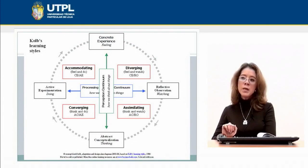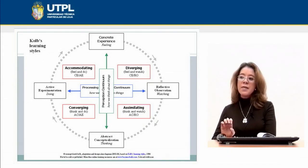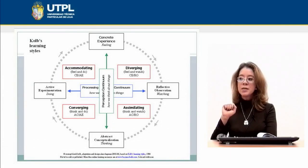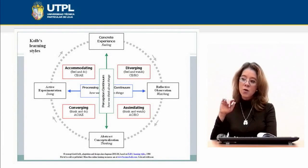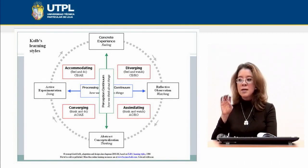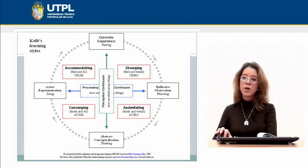There is a picture illustrating Kolb's learning styles. You can see the accommodating, divergent, convergent, and assimilating styles. He organizes these step by step in a cycle: concrete experience, reflective observation, abstract conceptualization, and active experimentation. With this cycle, we can see how people learn according to each style — whether they prefer to feel, to think, or to watch. All of these styles are related within this cycle.